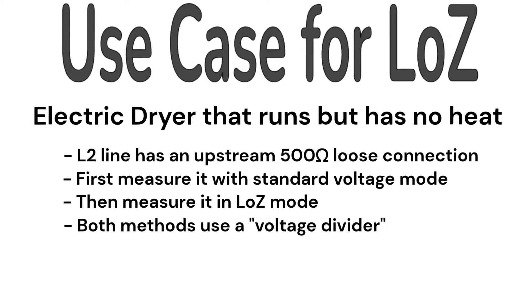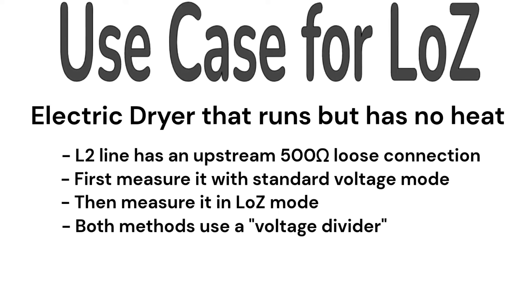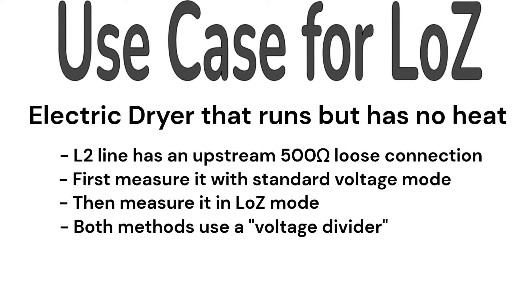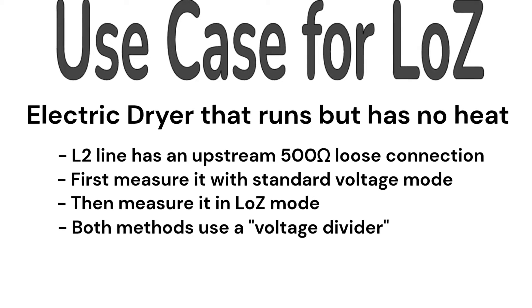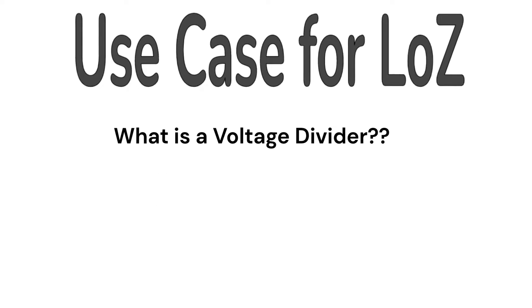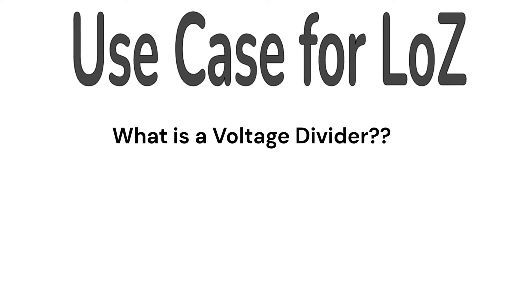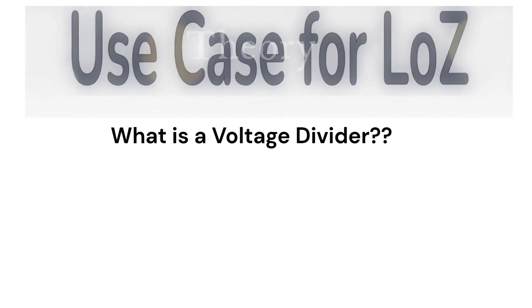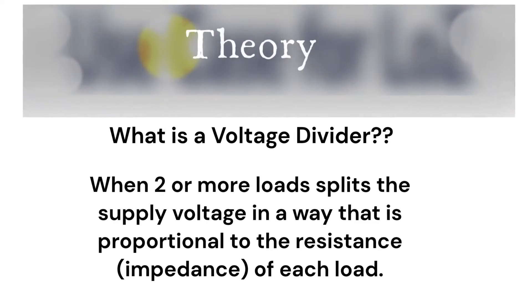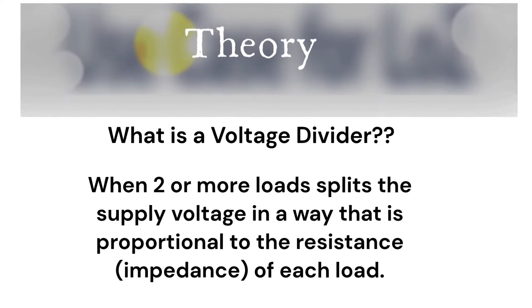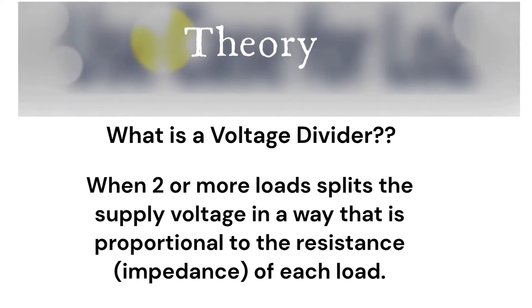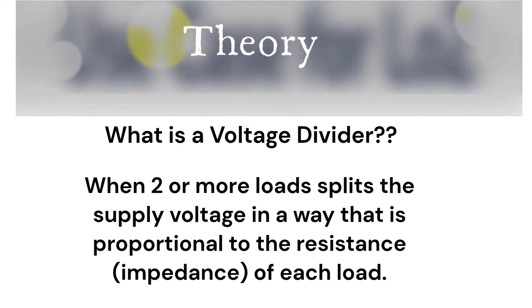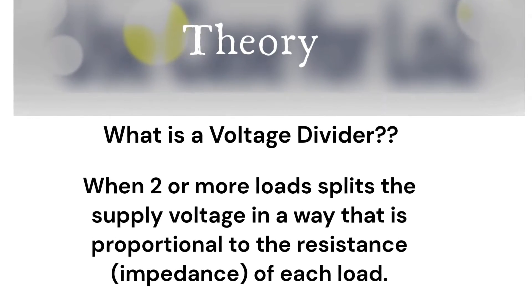Both methods effectively use a voltage divider to give you a reading. A voltage divider is when two or more loads in series splits the supply voltage in a way that is proportional to the resistance of each load.